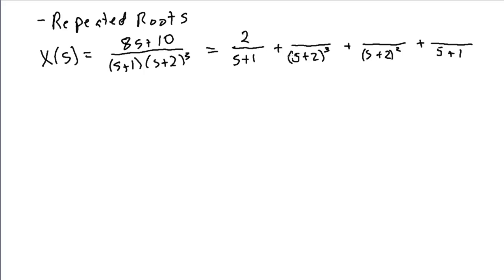For the highest order term, I can also use the cover-up method: multiply both sides by s plus 2 cubed and evaluate at s equal to minus 2. Covering up the s plus 2 cubed term, evaluating at s equal to minus 2, gives minus 16 plus 10 equals minus 6 in the numerator, and minus 2 plus 1 equals minus 1 in the denominator. So minus 6 divided by minus 1 gives coefficient 6. I can't use cover-up for the remaining two terms — I'll call them A and B.